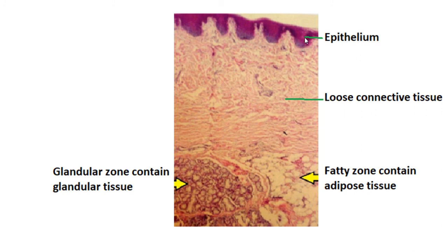This is the histological picture of the oral part of the hard palate. This is the epithelium — usually this epithelium is characterized as keratinized stratified squamous epithelium; in some places it is parakeratinized. This is the loose connective tissue or lamina propria, but it contains more densely arranged collagen fibers.